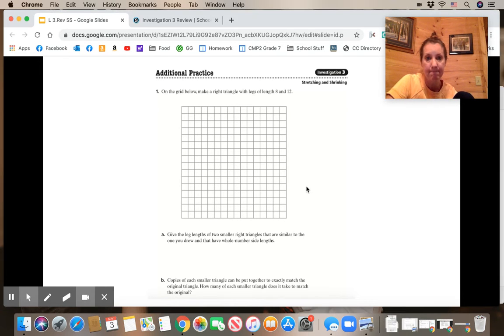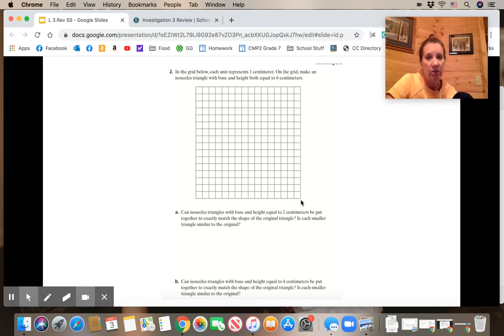In question 2, on the grid below, each unit is one centimeter. On the grid, make an isosceles triangle with a base and a height both equal to 6. Isosceles is the one that has two sides the same, so you'd find the base and the height and then connect from the height to the two ends of that one bottom base.